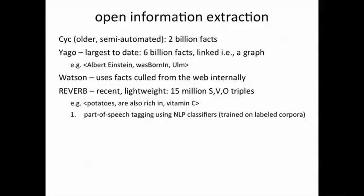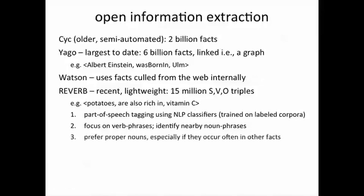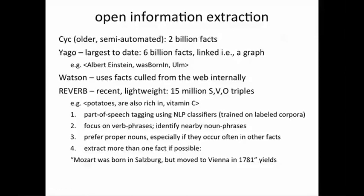The way Reverb works, just to give you a flavor for how such systems work, is first it tags each piece of text using natural language processing classifiers to say which is a noun phrase, which is a verb phrase, which is a preposition. And then it focuses only on the verb phrases and figures out what are the nearby noun phrases using classifiers just as we have discussed. It prefers proper nouns, especially if they occur often in other facts, so that words like Einstein are preferred rather than person or scientist. And wherever possible, it manages to extract more than one fact from a piece of text. So from a text like Mozart was born in Salzburg but moved to Vienna in 1781 yields two facts. Mozart moved to Vienna in addition to Mozart was born in Salzburg.